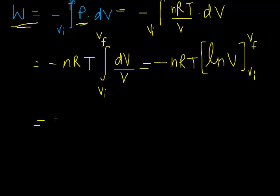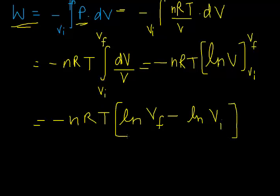Now this equals minus nRT ln V final minus ln V initial. So the work done becomes minus nRT ln V final upon V initial.